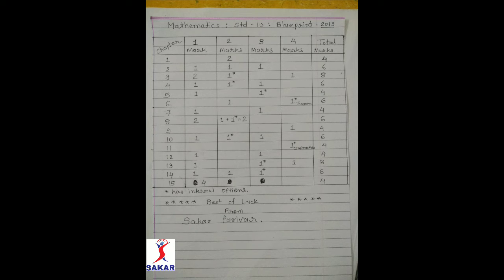Now you can see the blueprint of the paper style for Standard 10 Mathematics. In the first column you see chapters — in Standard 10 there are 15 chapters. In the second column, 1 mark questions. In the third column, 2 mark questions. In the fourth column, 3 mark questions. In the fifth column, 4 mark questions. And in the sixth column, total marks.